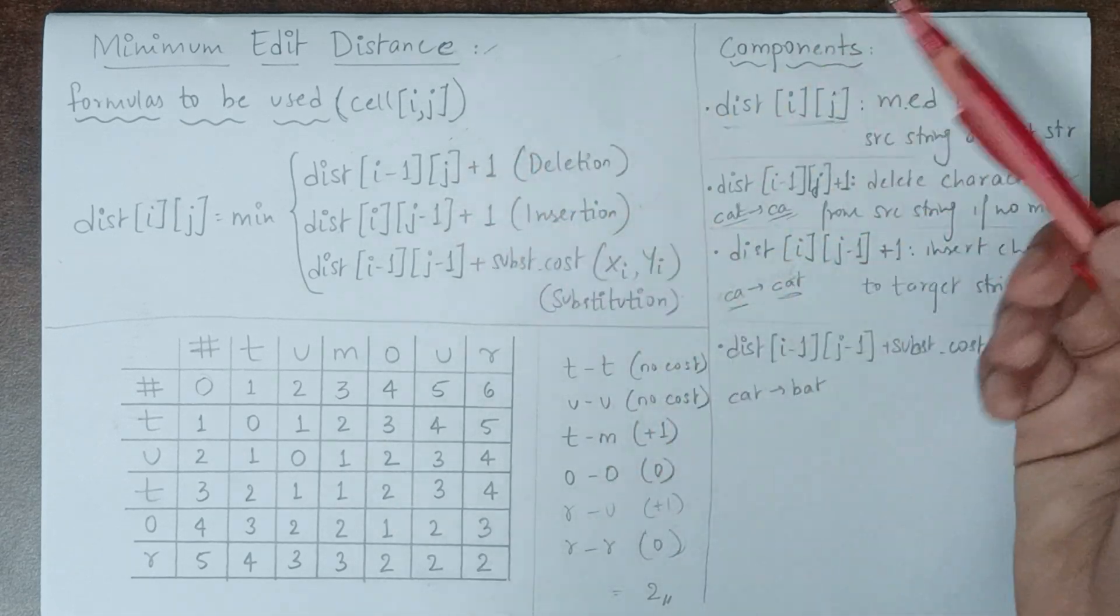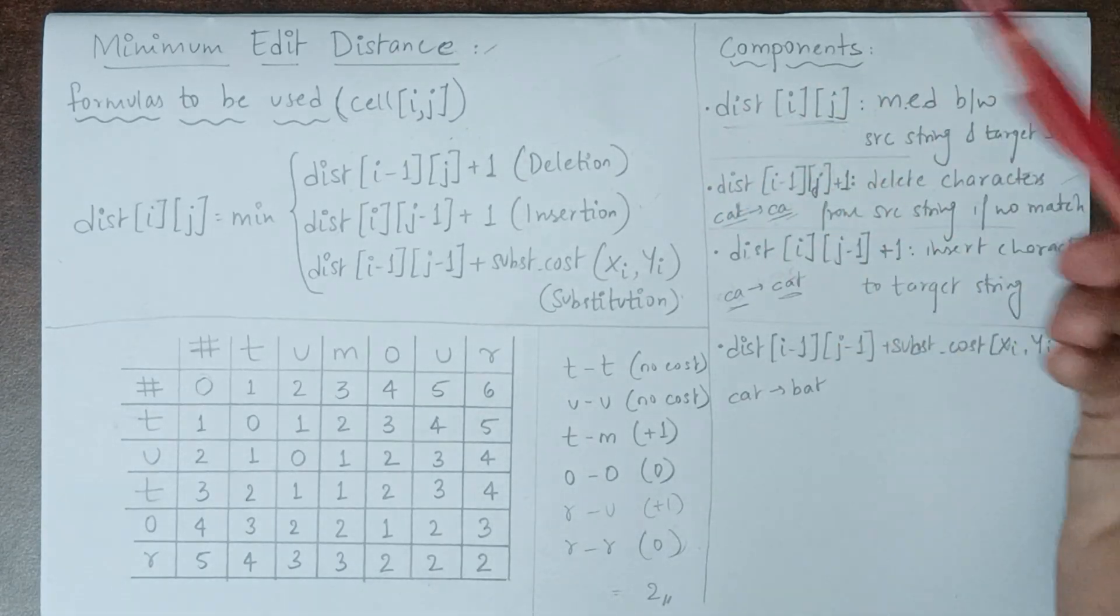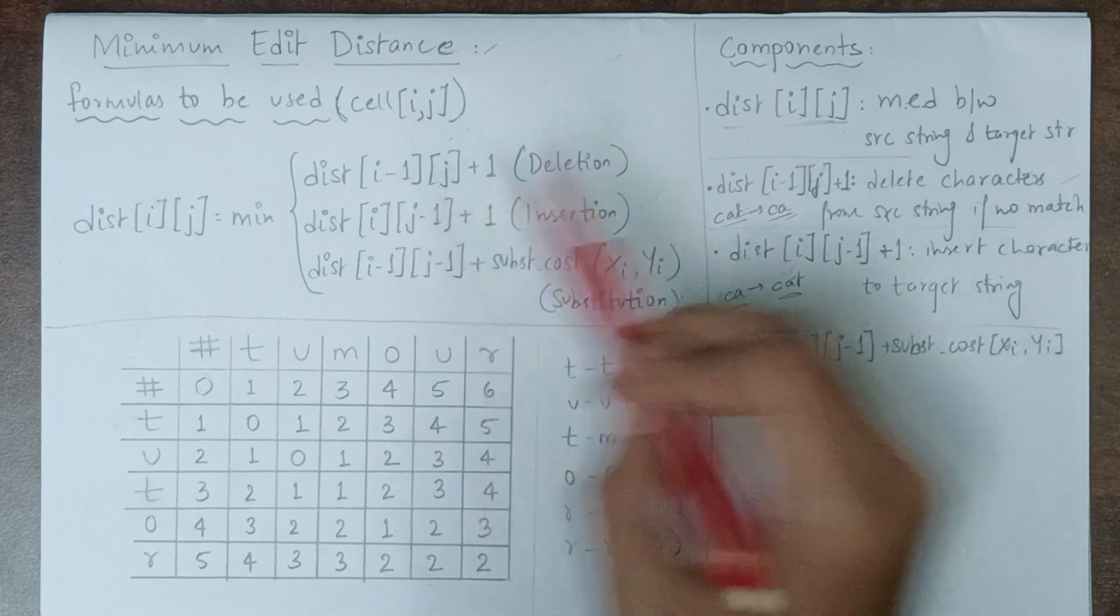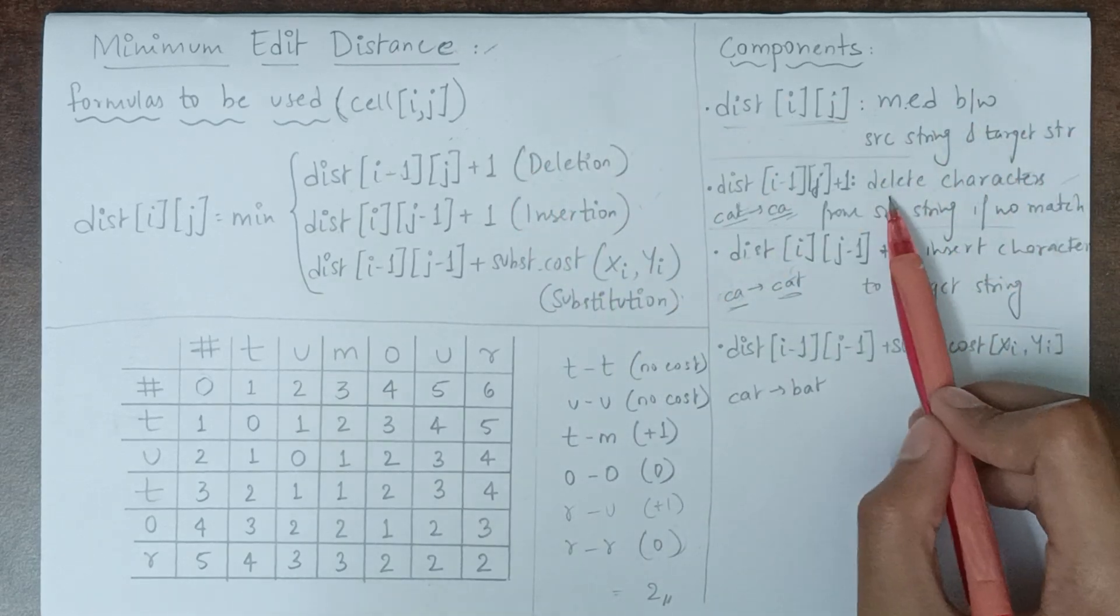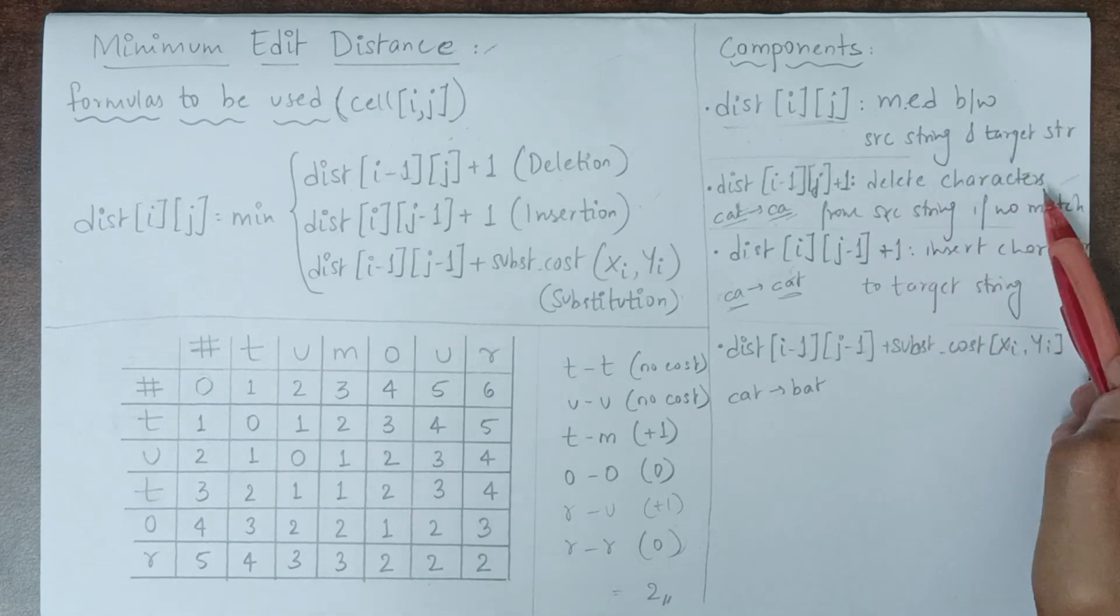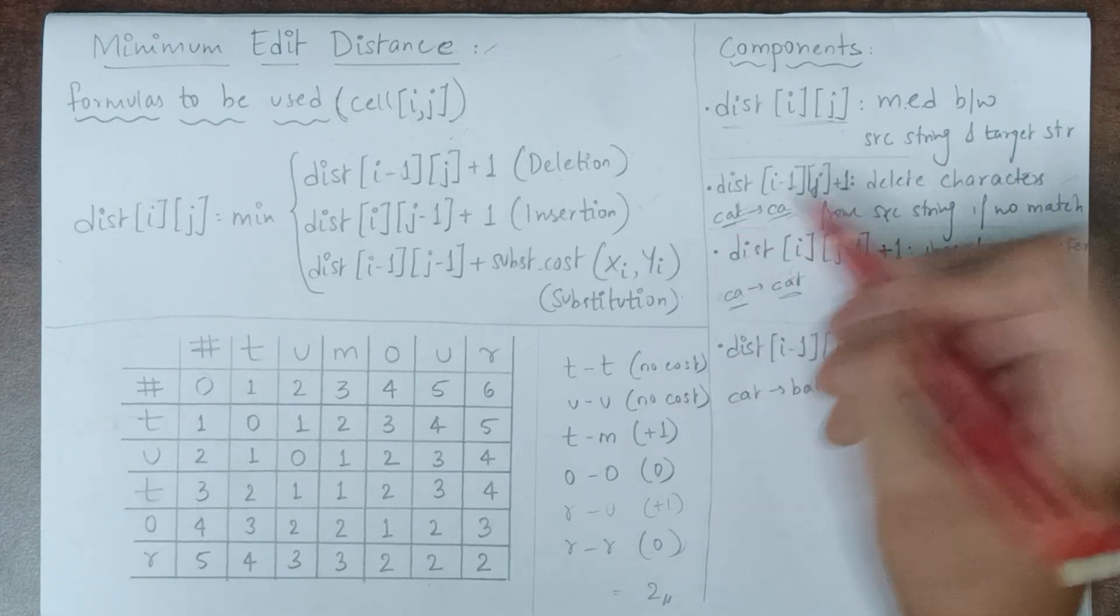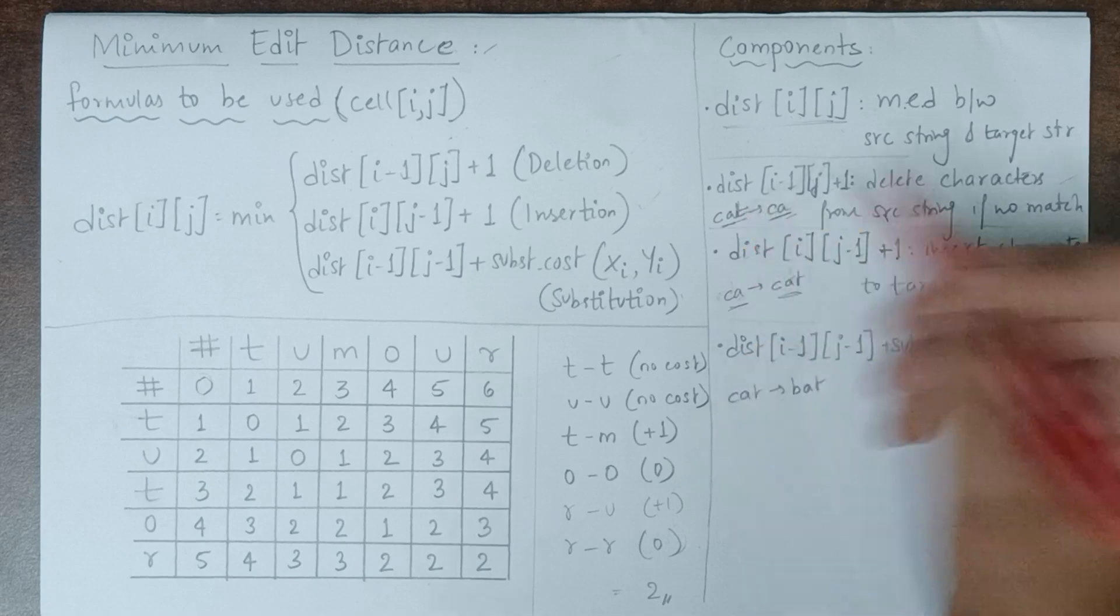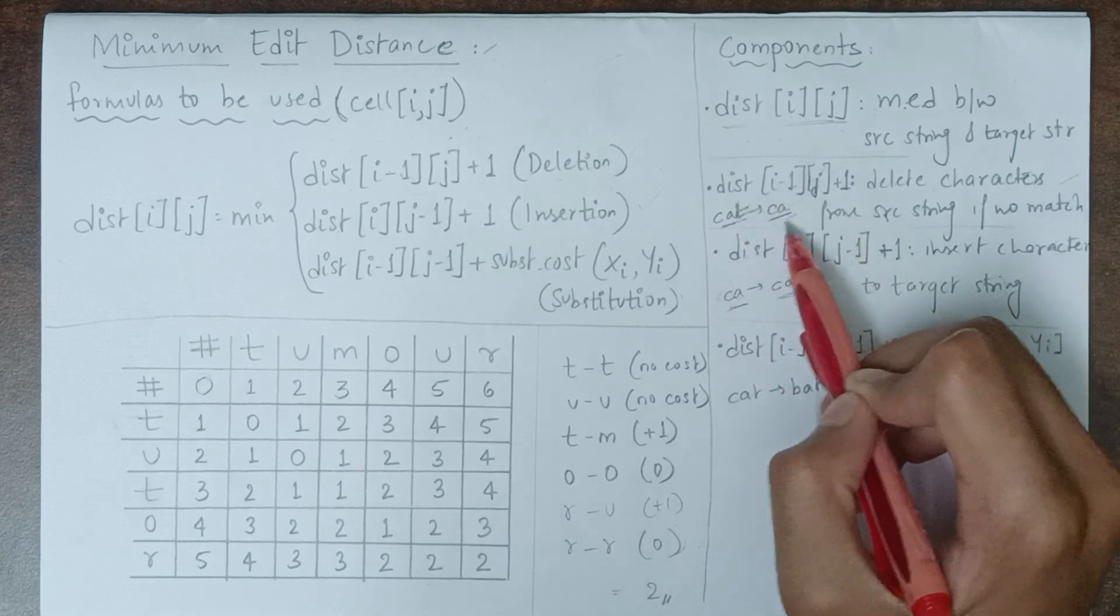Now let's move on to the three operations and formulas used to execute minimum edit distance. Starting with deletion, the formula is distance[i-1, j] + 1. In this deletion operation, we delete characters from the source string if there is no match. For example, if you have the string 'cat' and need to convert it to 'ca', you delete the 't', eliminating characters from the source string to obtain the target string.